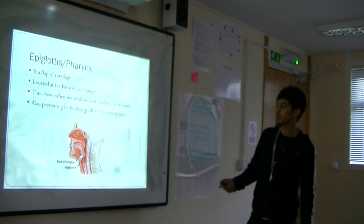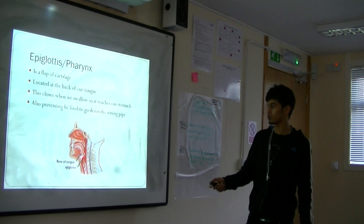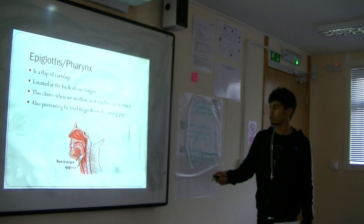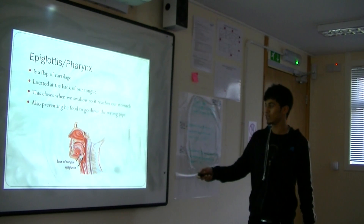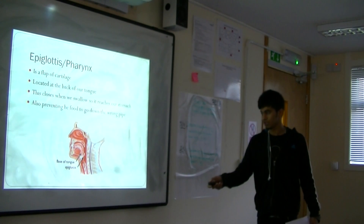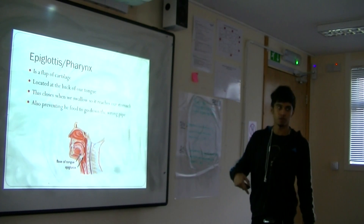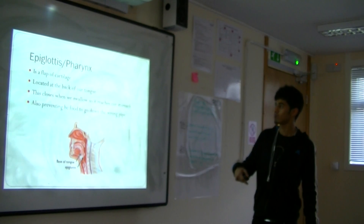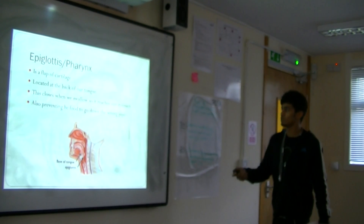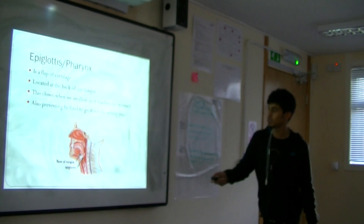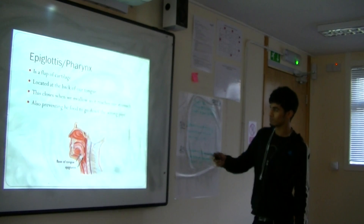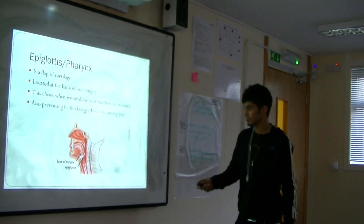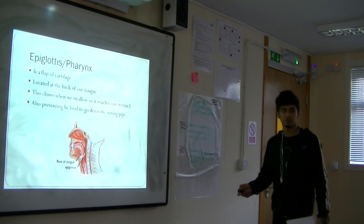The epiglottis is the flap that, when we eat food, blocks it from going down into our lungs — it directs it down the oesophagus instead. The pharynx is the tube where food travels down.